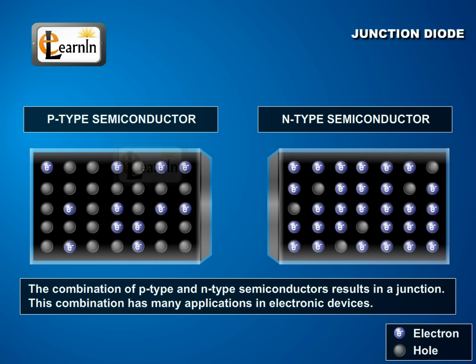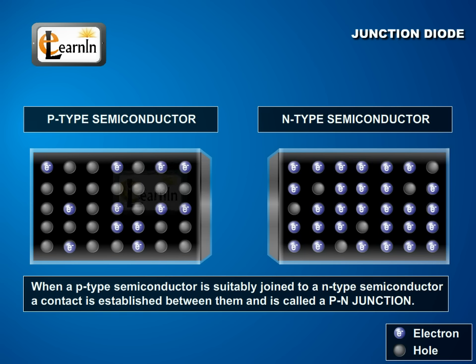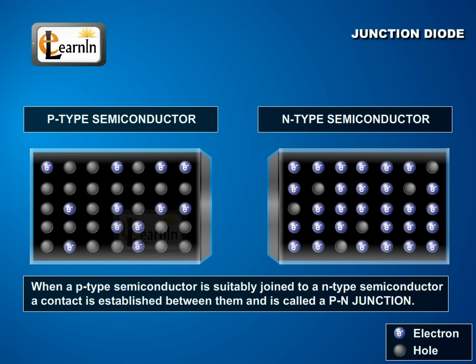The combination of P-type and N-type semiconductors results in a junction. This combination has many applications in electronic devices. When a P-type semiconductor is suitably joined to an N-type semiconductor, a contact is established between them and is called a PN junction.